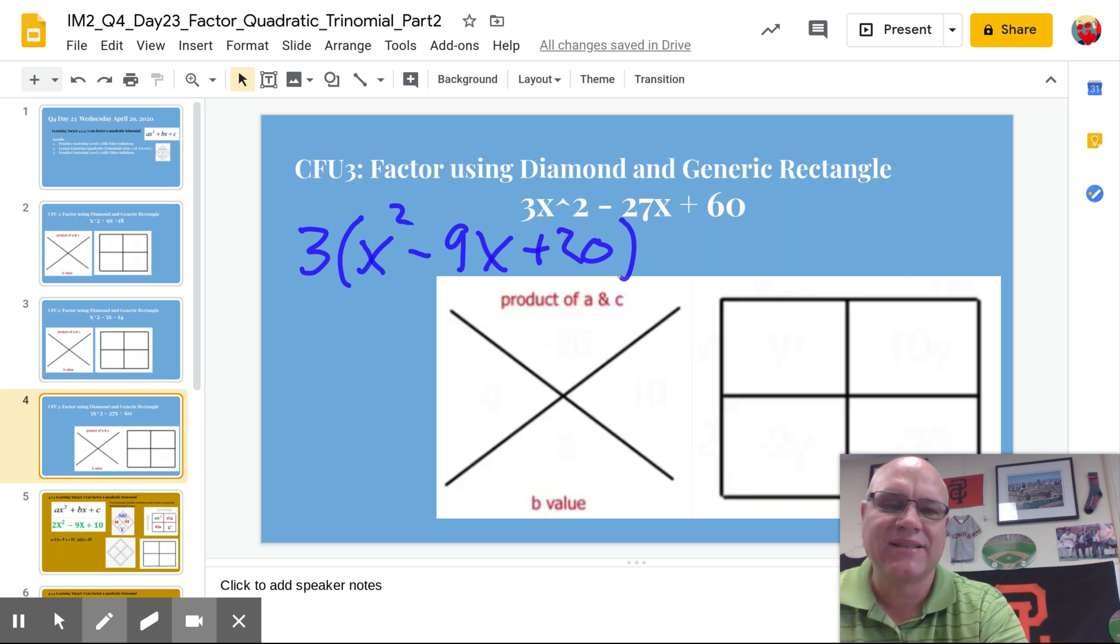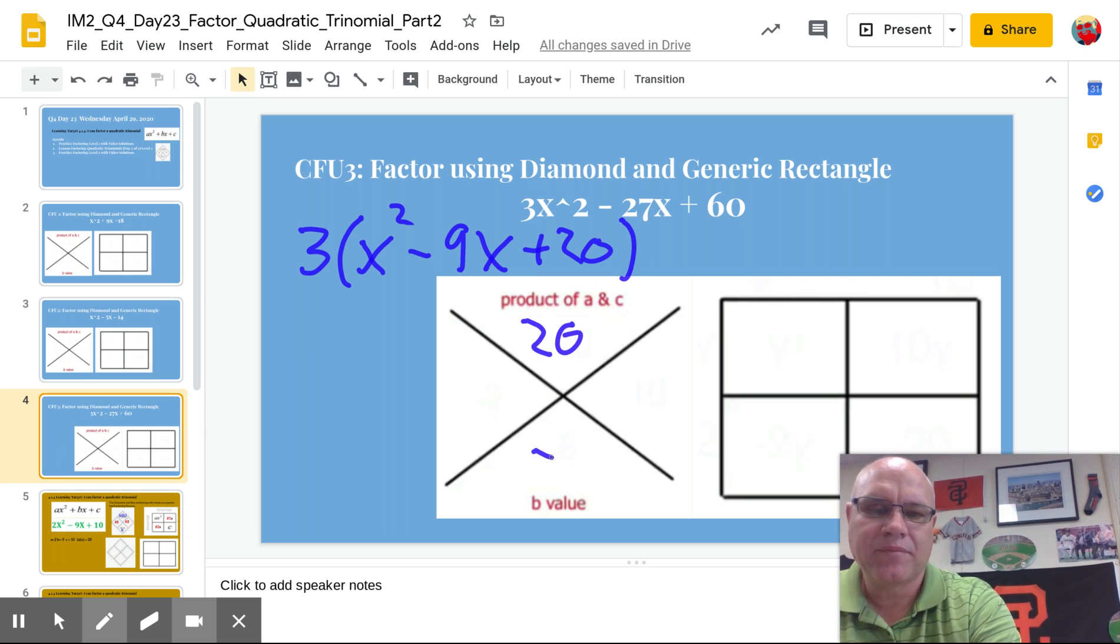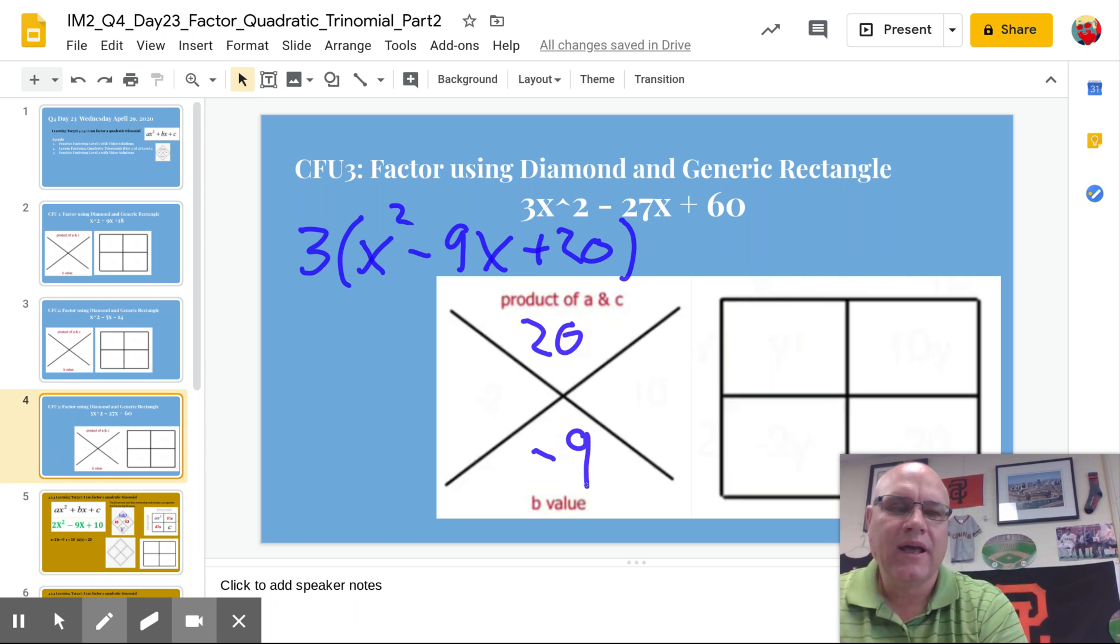So AC in this case is 1 times 20, which is 20. And the b value is negative 9. So now I need two numbers that multiply to 20 and add to negative 9. So since it's a positive product when you multiply, you get a positive number. We know it has to be positive positive or negative negative. Well, if we want the sum to be negative 9, it has to be negative negative. So I know that.